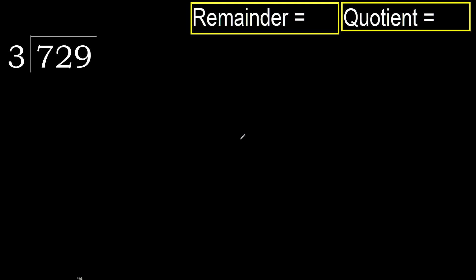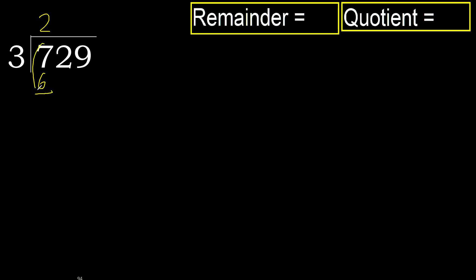729 divided by 3. 7 is not less, therefore start with 7. 3 multiplied by which number is nearest to 7 but not greater? 3 multiplied by 3 is 9, which is greater. Multiply by 2 is 6, which is not greater. Subtract: 7 minus 6 is 1.